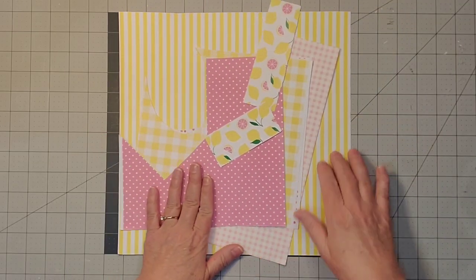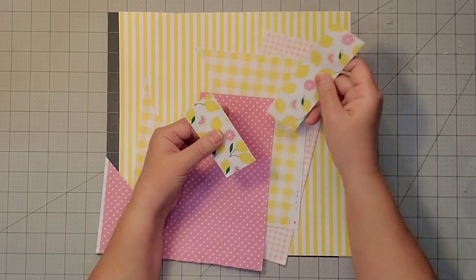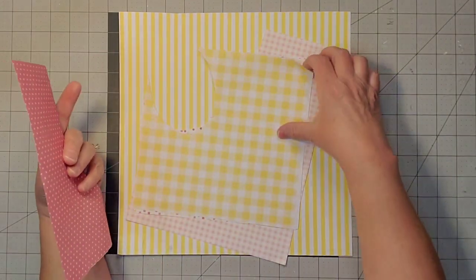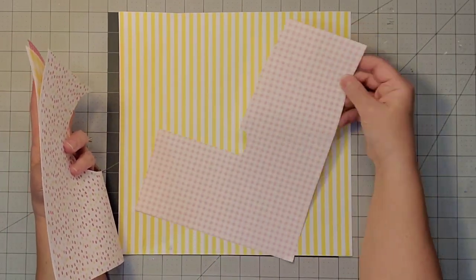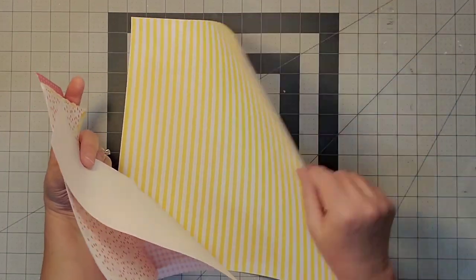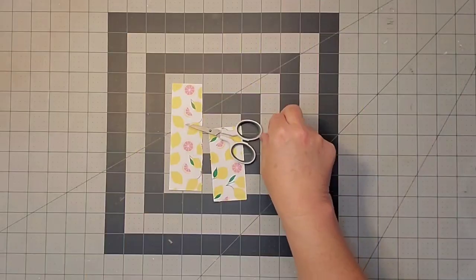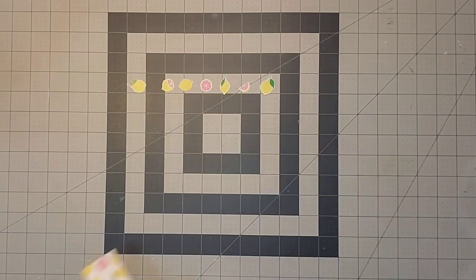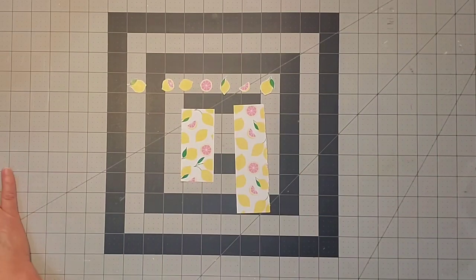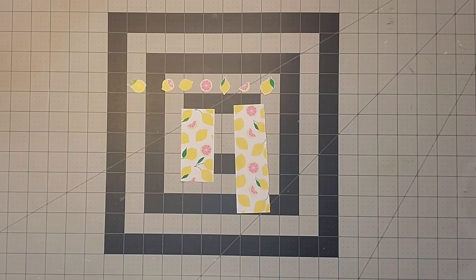For this project, I'm going to use up some of the scraps left from all the pages I've been using for my miniatures. I'm going to use them to make a pennant for my tiered tray. For this paper, I'm going to fussy cut with my scissors some of the lemons and slices to use on my pennant.